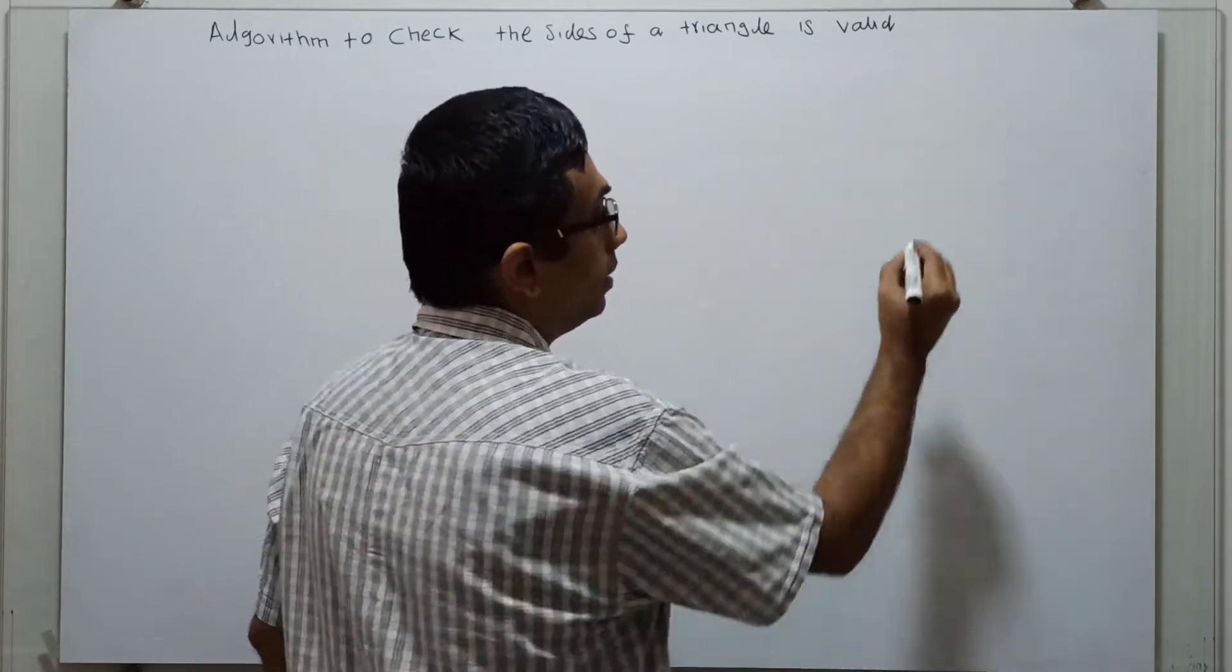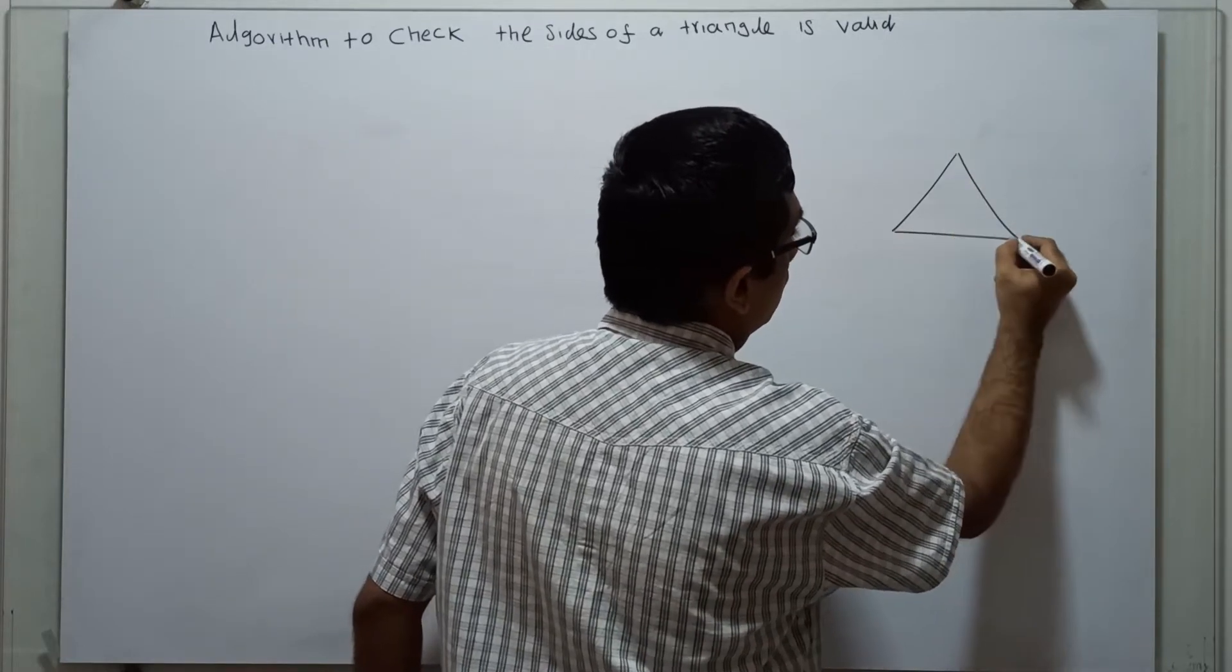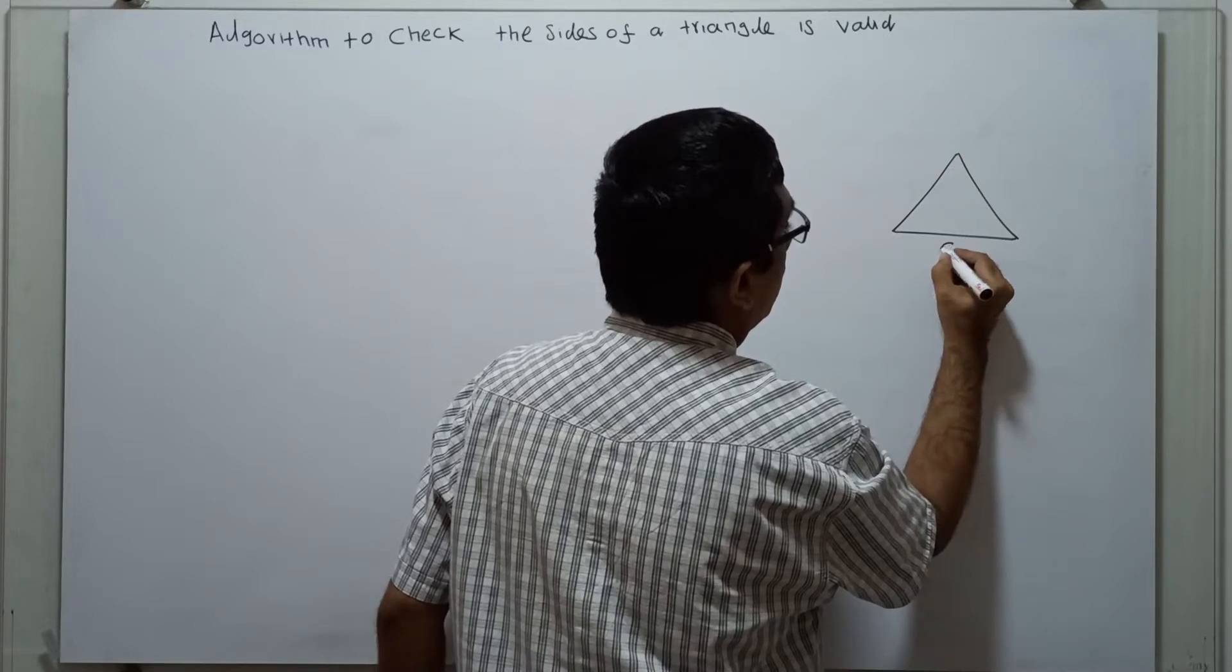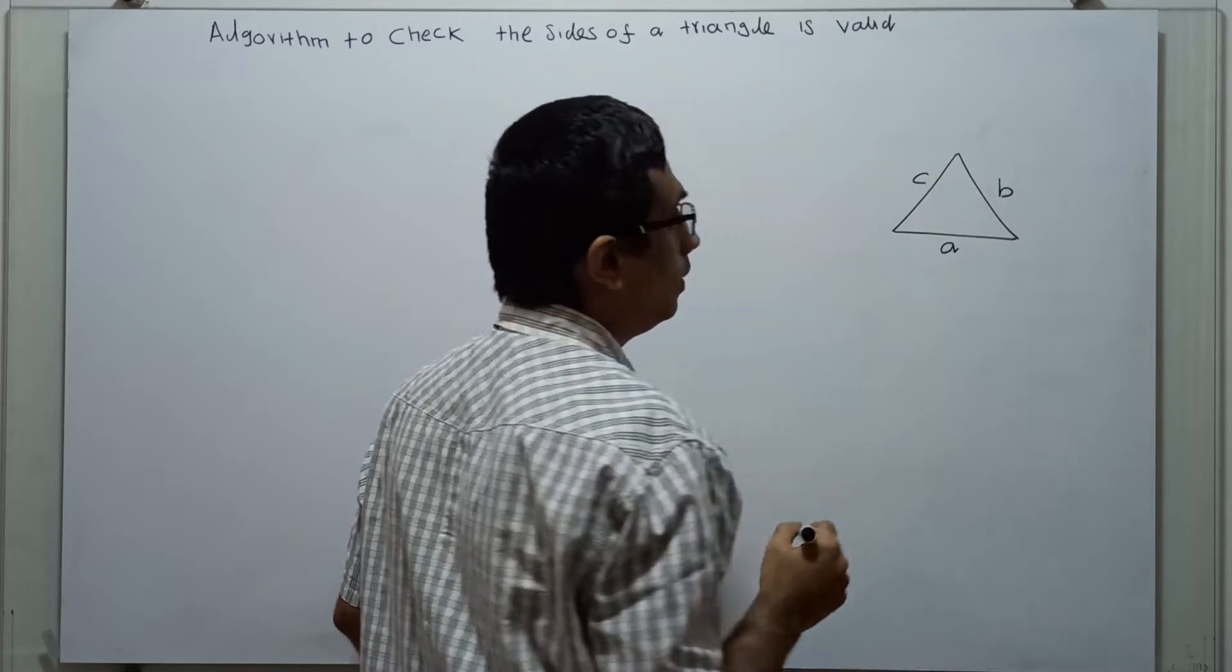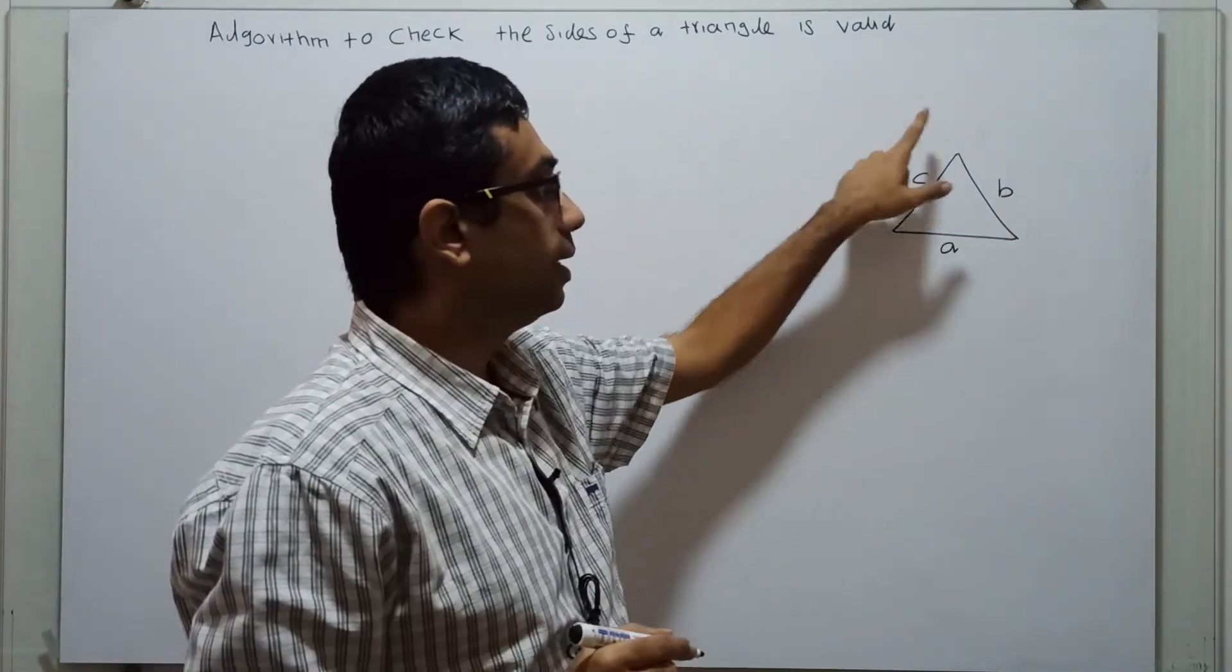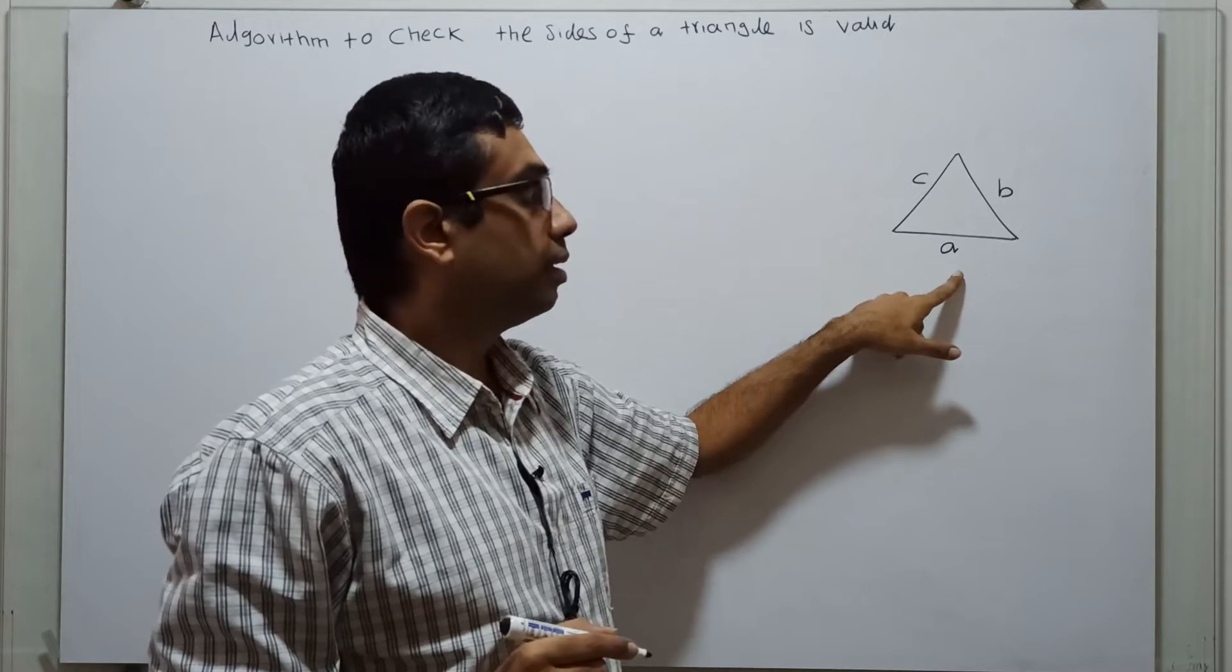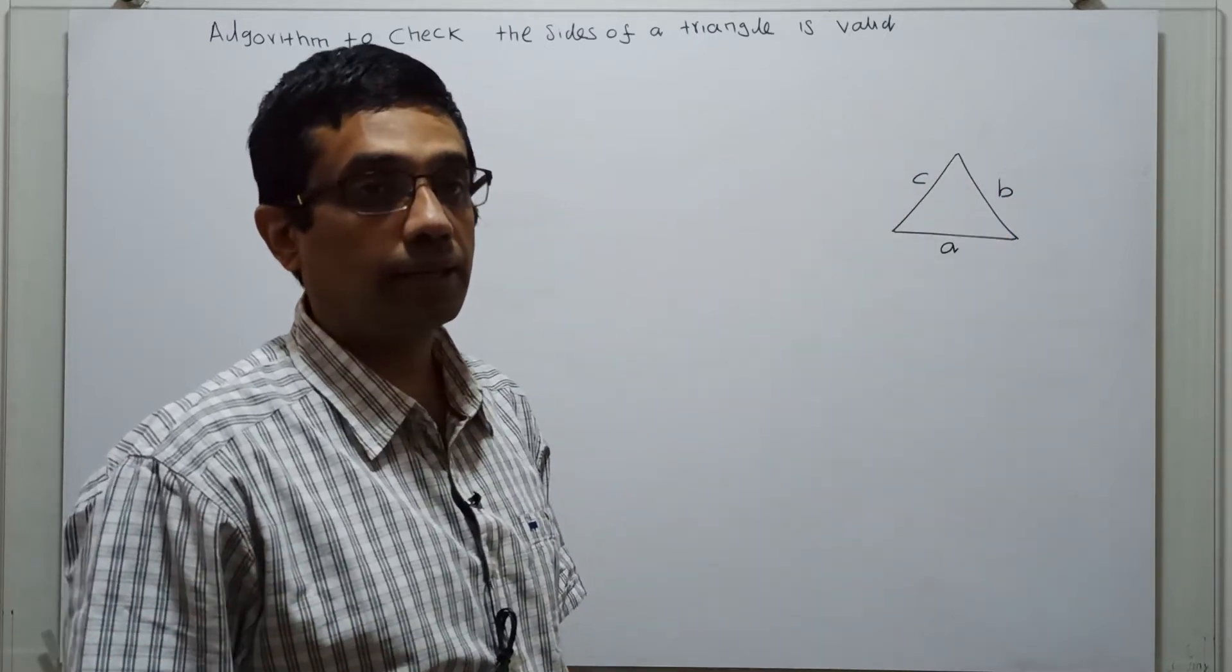We take a triangle. The triangle is having three sides. We can say A, B, C. We have to obtain the three sides from the user and we have to check the sides of the triangle is valid or not.